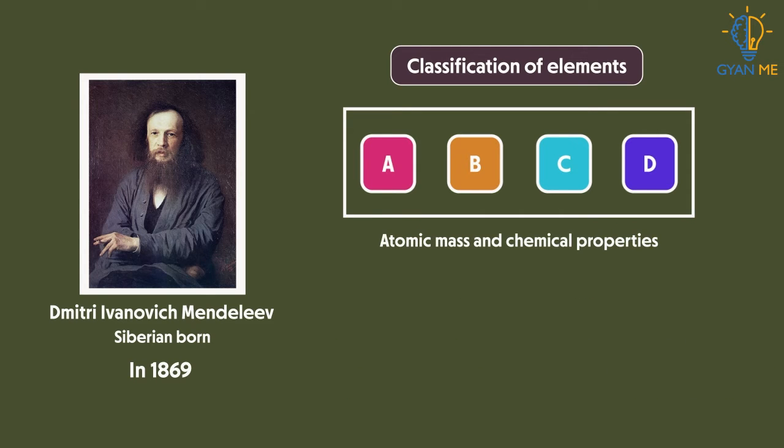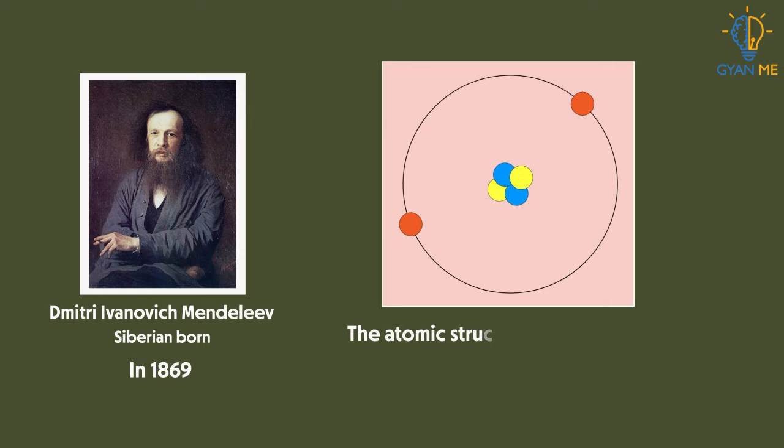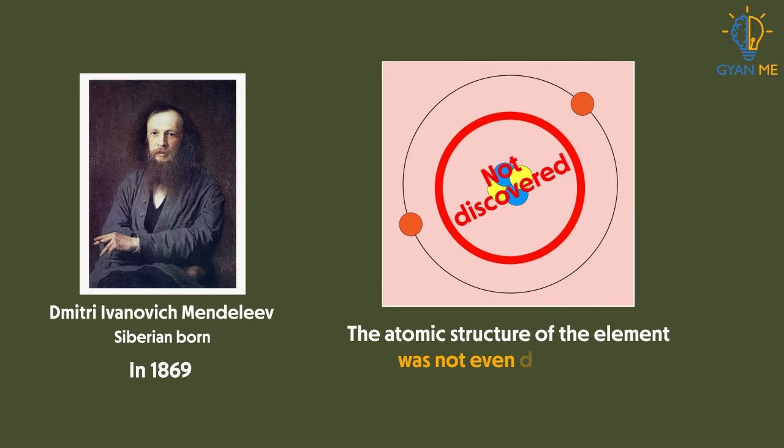When Mendeleev began the classification of elements, only 63 elements were discovered at that time. The atomic structure of the element was not even discovered yet.